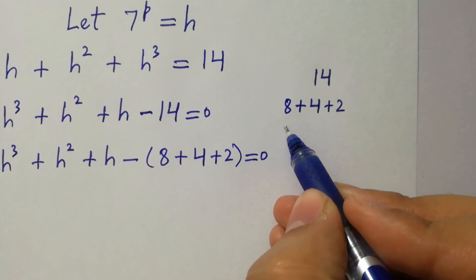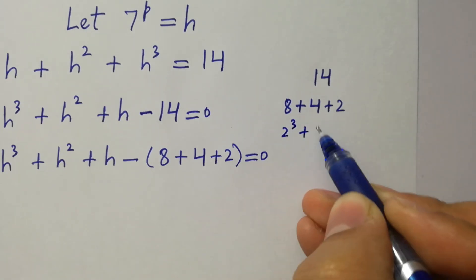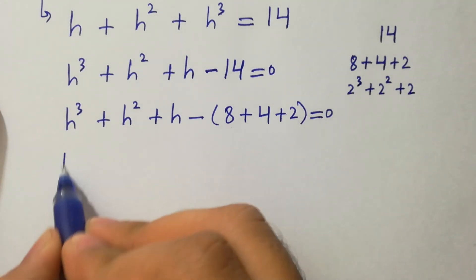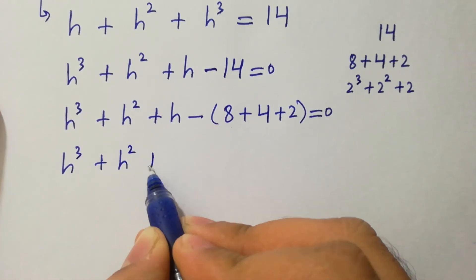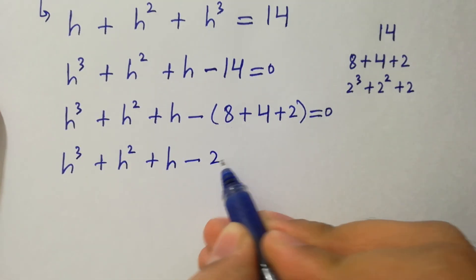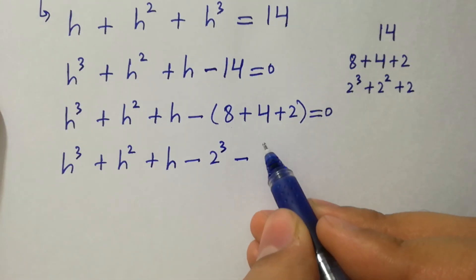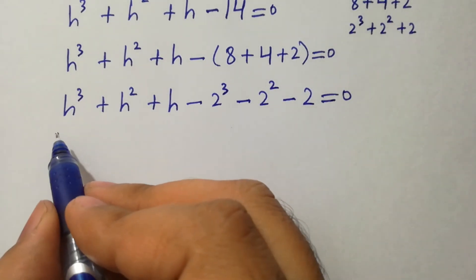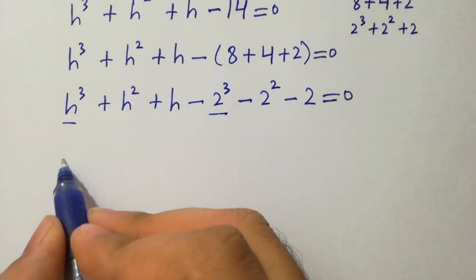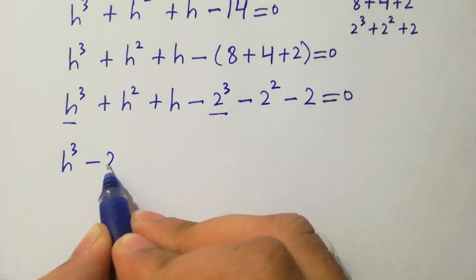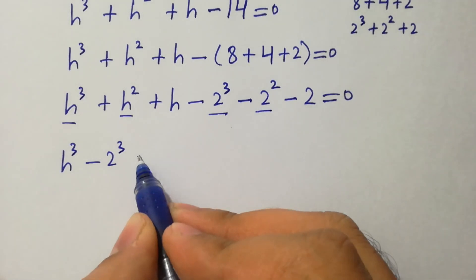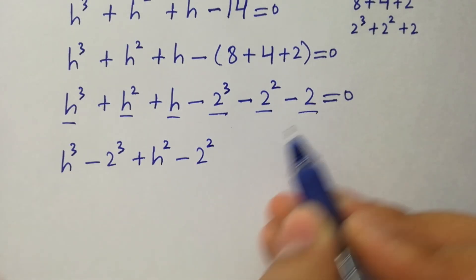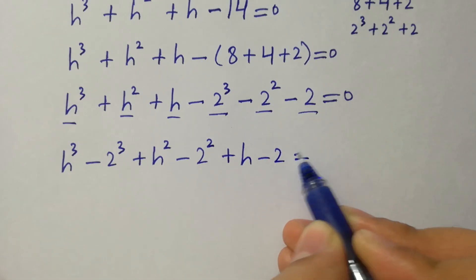Here 8 is equal to 2 cubed, and 4 is 2 squared, and 2 as it is. So it will be h cubed minus 2 cubed, plus h squared minus 2 squared, plus h minus 2, equal to 0.